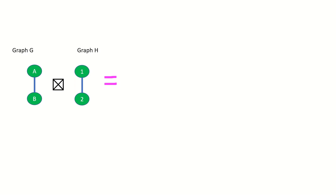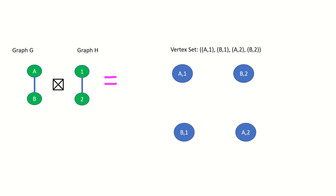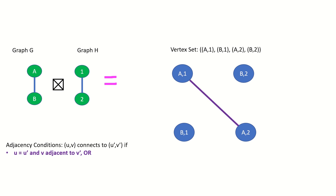Let's work through a few strong products together. First, what is the strong product of two path graphs with two vertices? We'll need the vertex set to begin with — here it is. Next, we need to connect the vertices. According to the first adjacency condition, vertex A1 will connect to vertex A2, as the left entry of those vertices is the same vertex in graph G, that is vertex A, and the right entries are adjacent vertices in graph H — vertex 1 is adjacent to vertex 2.